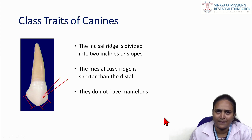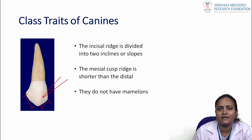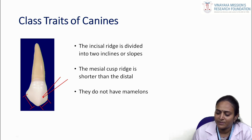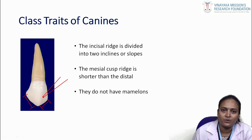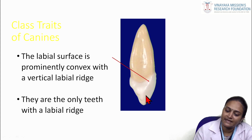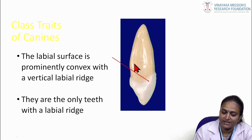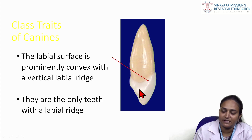Canines do not have mamelons; mamelons are present only as the three rounded protuberances seen in permanent incisors, but not in canines. Another classic triad feature: the labial surface is prominently convex with a vertical labial ridge — canines are the only teeth that have a labial ridge. Here you can see the prominent vertical labial ridge.